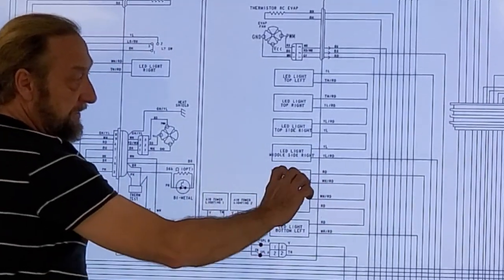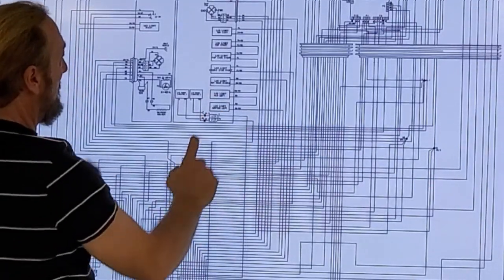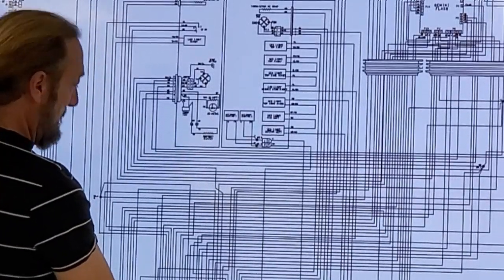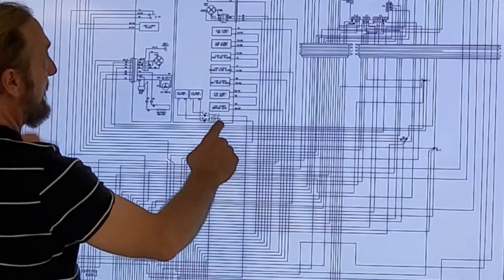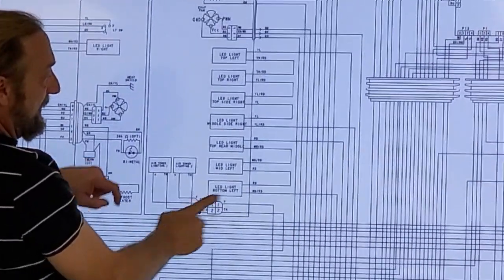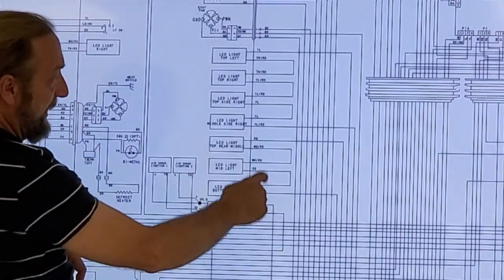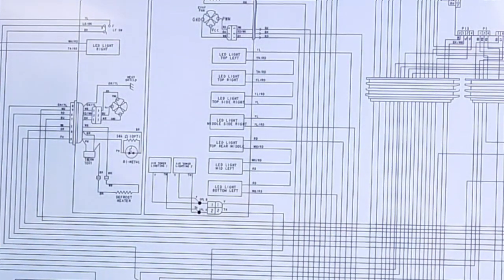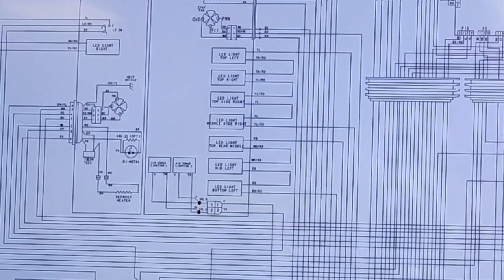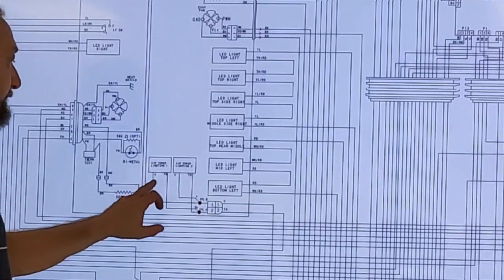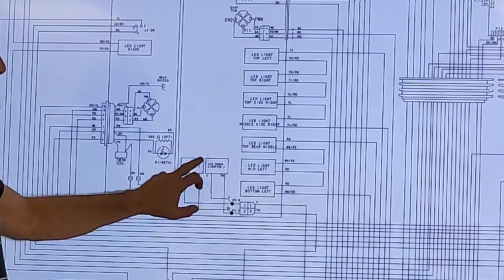Now this is a separate gang from that one. This one here is a separate gang of lights from here. But if one of those lights fails, then all of the lights stop working, so it's a little bit hard to diagnose. So this is all lighting.